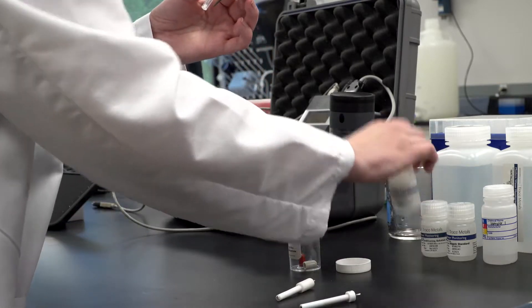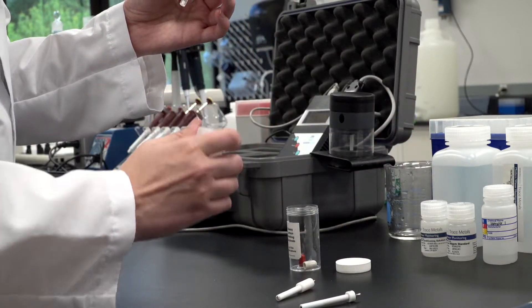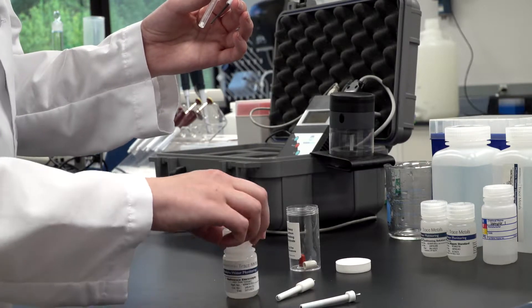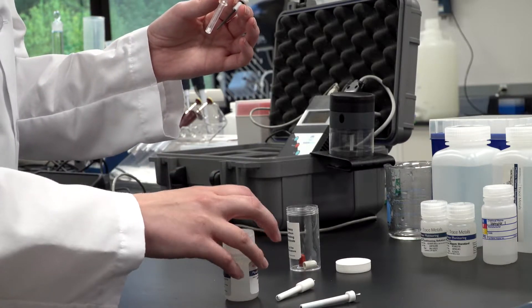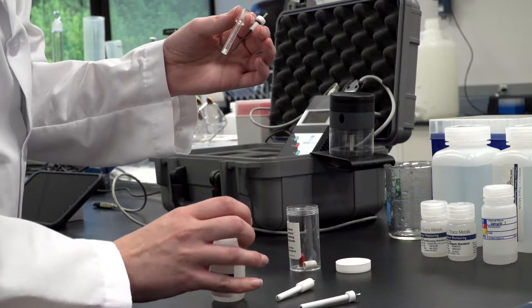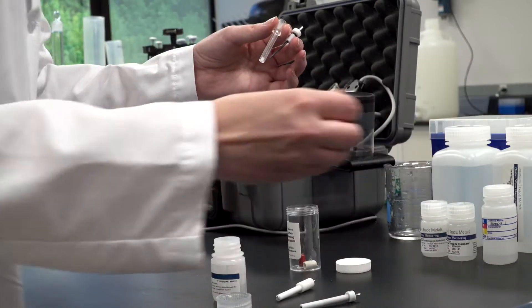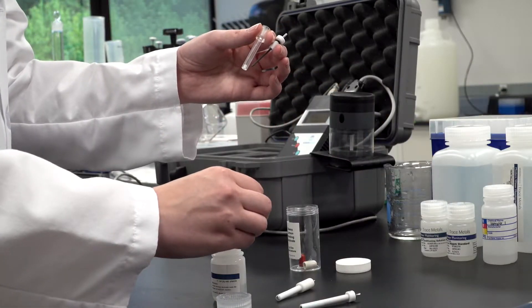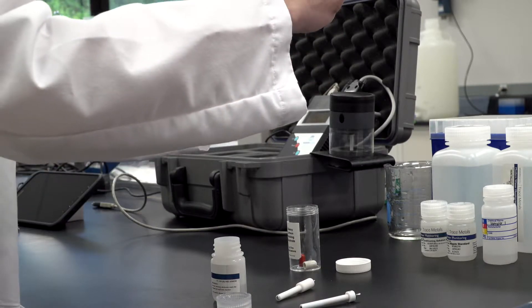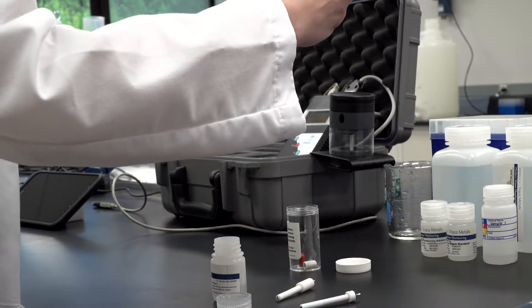Fill the reference electrode sleeve with reference electrolyte, part number 810060, to approximately three-quarters full or the level where the electrode casing sleeve widens. Do not completely fill the electrode sleeve, otherwise the frit may be pushed out due to hydraulic pressure.